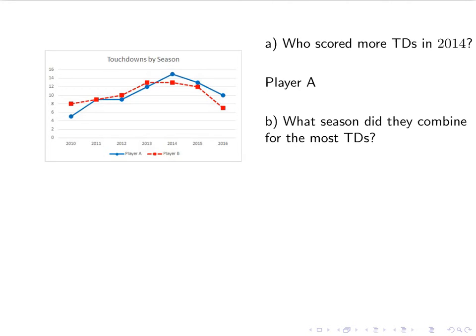What season did they combine for the most touchdowns? So depending on what the lines look like, you might have to add them up for each one. So what was the total for them in 2010? What was the total in 2011? But hopefully we can see that it's going to be one of these three years: either 2013, 2014, or 2015. So I can ignore 2010, 2011, 2012, and 2016. And then add them up for each of them. And hopefully we can see that it will be 2014. So it just says what season. It doesn't ask what they combine to be. So just 2014 is the answer.